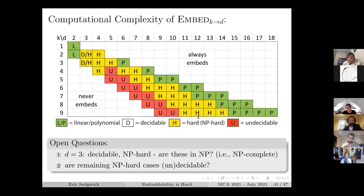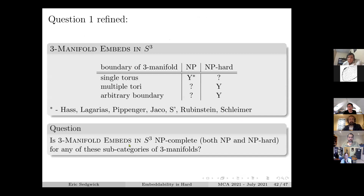There are open questions: the ones that are hard - we'd really like to know if they're decidable or not. For the ambient dimension three case, we know they're decidable and NP-hard, but the real question is are they in NP - are they NP-complete? It's also interesting to think about that question by considering the boundary of the manifold: are there multiple boundary components, one boundary component - is the problem any different with restrictions on the boundary?